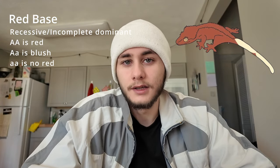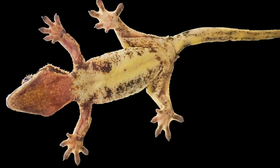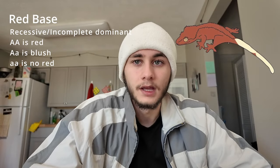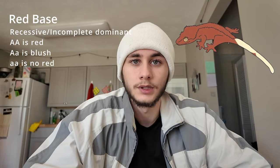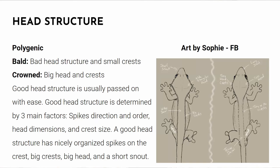The blushing mutation is basically the same mutation as red — it is the heterozygous form for red, showing a redneck or pink/orange neck. These are thought to be the heterozygous form for the red mutation. Tangerine is incomplete dominant and infuses the animal's color with orange. You can also have other structural genes: bold or crowned, which are polygenic. The crown gene is thought to be passed on with ease — if you pair a nice crested gecko that lacks good head structure with one that has good head structure, most babies will have good head structure.